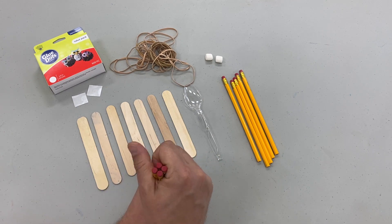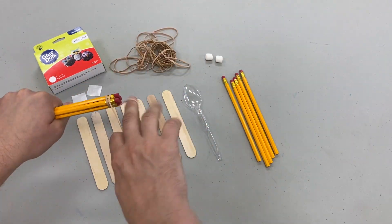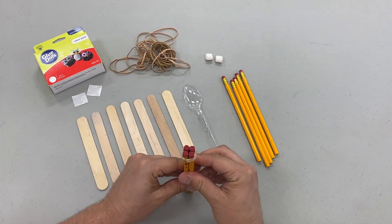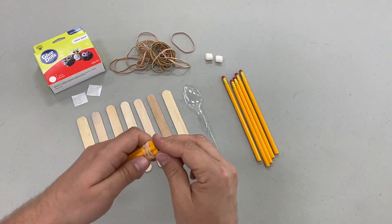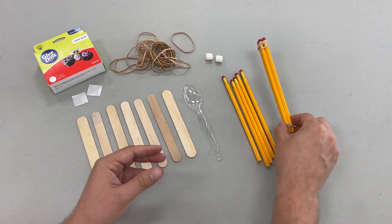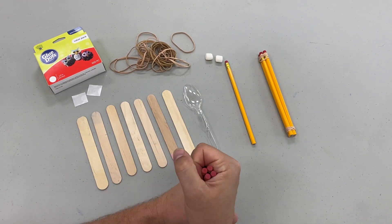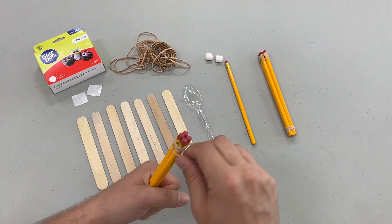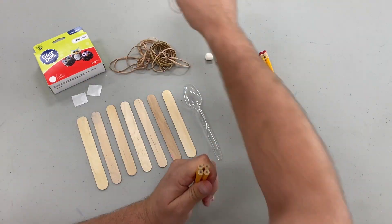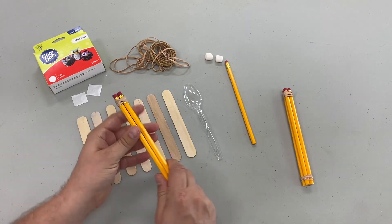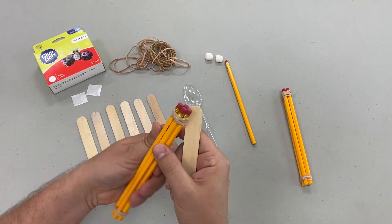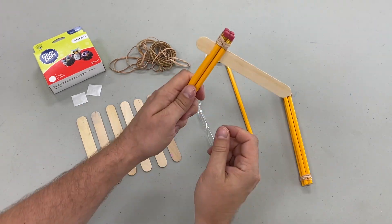So the first step is to take four pencils, arrange them in a square, and then wrap a rubber band around them holding the shape together. Now you're going to want to repeat that with four other pencils to make the base of your catapult.